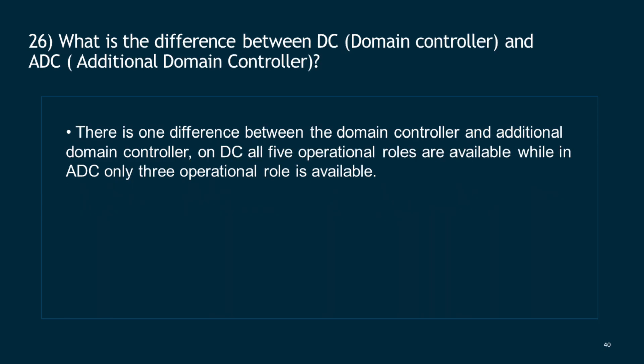Question 26: What is the difference between DC (Domain Controller) and ADC (Additional Domain Controller)? There is one key difference: on DC, all five operational roles are available, while on ADC only three operational roles are available.